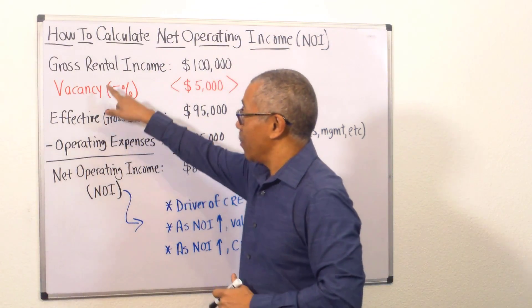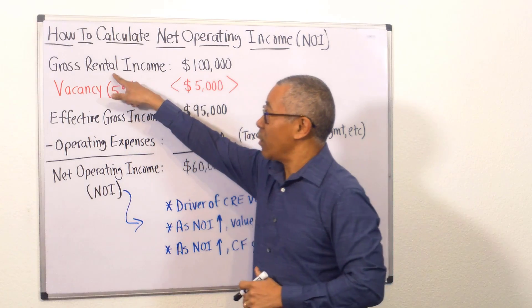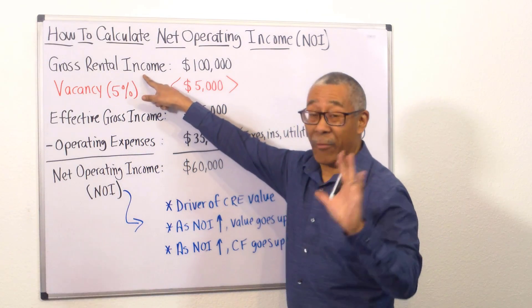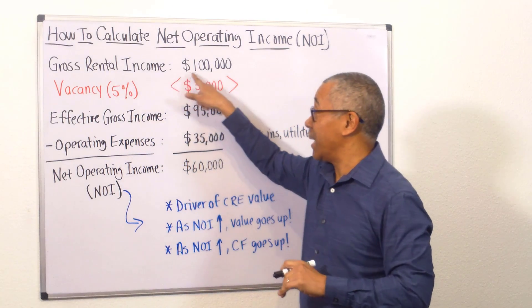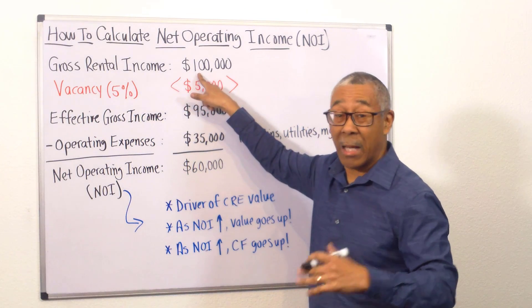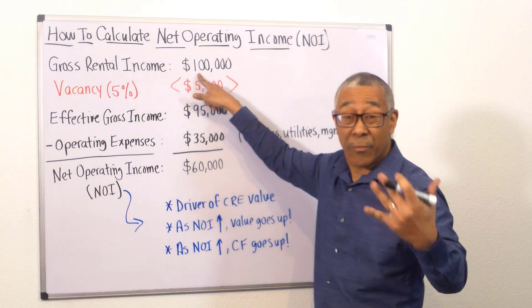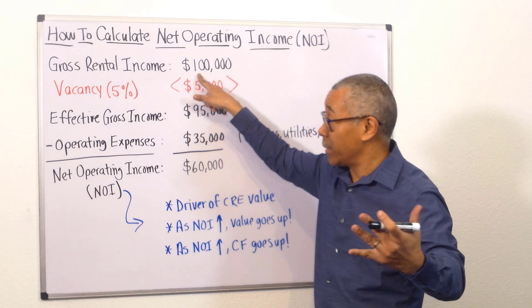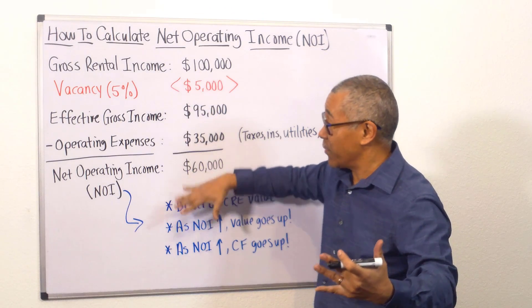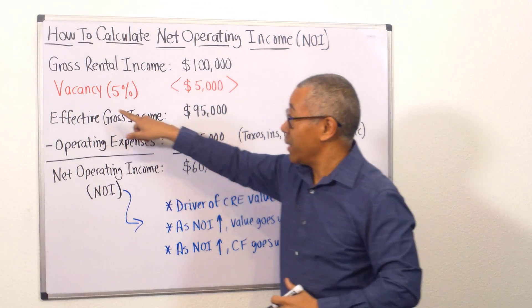All right, so we have our gross rental income for the property at $100,000. You can say this is for the year — everything's for the year here.